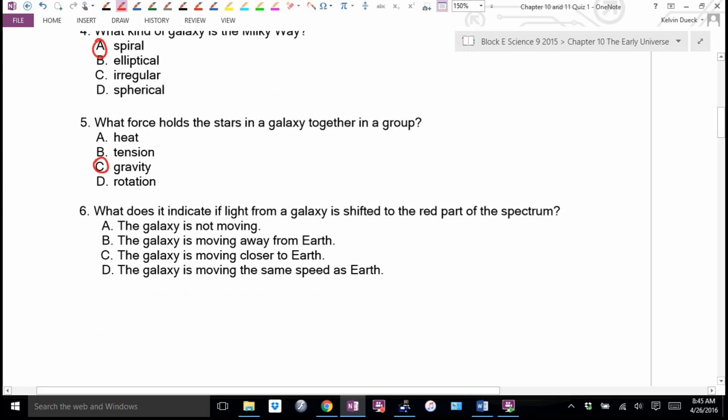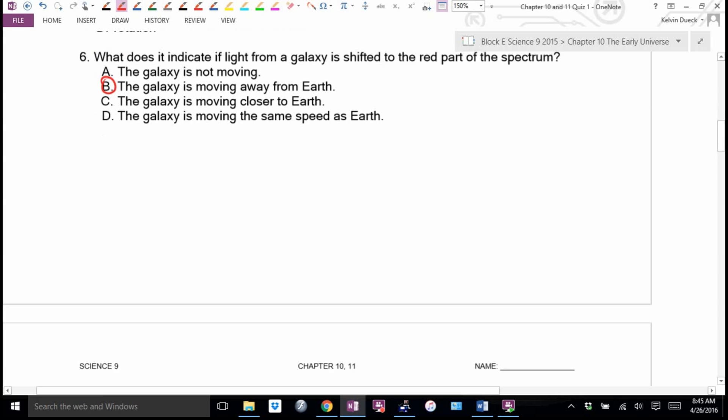What does it indicate if light from a galaxy is shifted to the red part of the spectrum? Tensei. Say B. B. It means moving away. You hear it also with cars, except instead of seeing it as color, you see it as pitch. The sound gets lower and then gets higher as it goes away. You hear that noise. It's kind of cool.